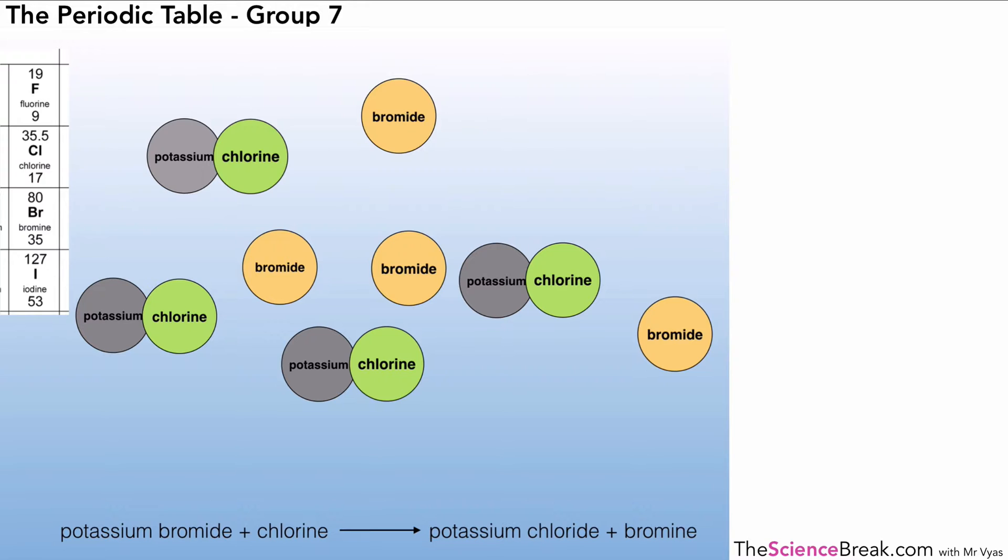So this is how it works. We can write a word equation. So we've got potassium bromide plus chlorine becomes potassium chloride plus bromine. It's worth noting that the chlorine, when it reacts or displaces the bromine, it becomes chloride, so it's potassium chloride. And the bromide, when it's in the compound, when it comes out or is displaced becomes bromine, which is the molecule. So that's one example, we can look at a second example of a similar reaction.